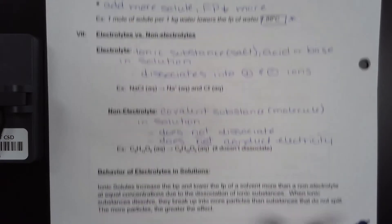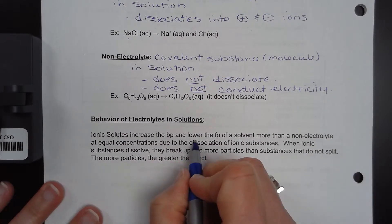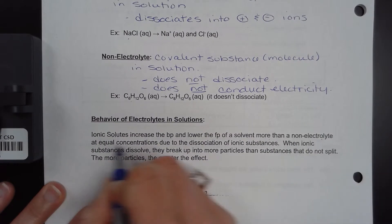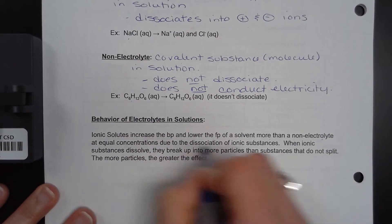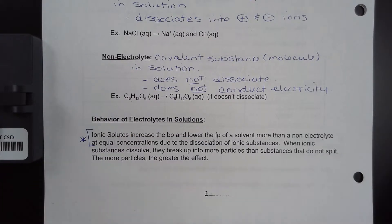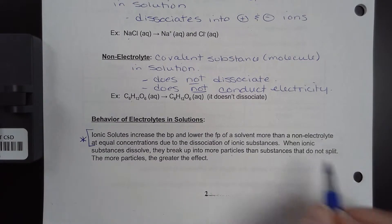Now behavior that we need to know. Ionic solutes increase the boiling point and lower the freezing point of a solvent more than a non-electrolyte at equal concentrations due to the dissociation of substances. Please star that. When ionic substances dissolve they break up into more particles than substances that do not split. The more particles, the greater the effect.